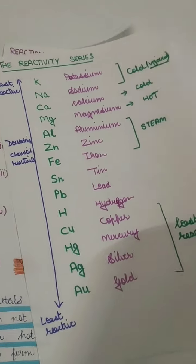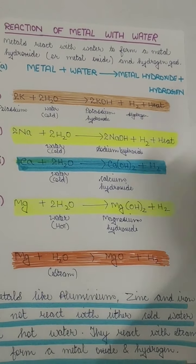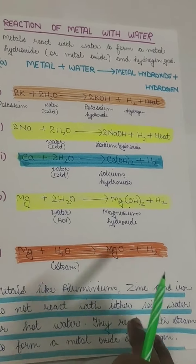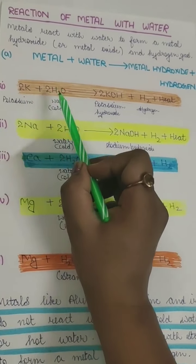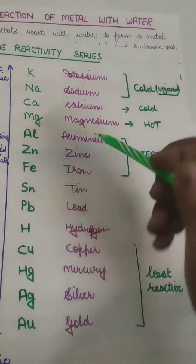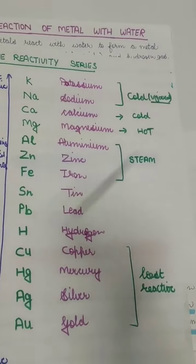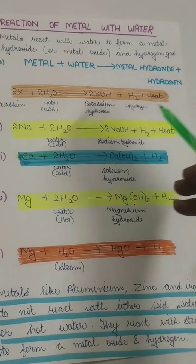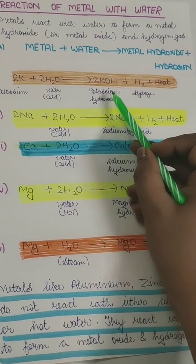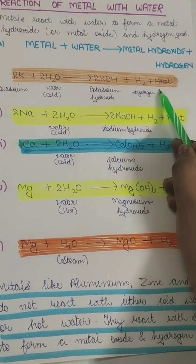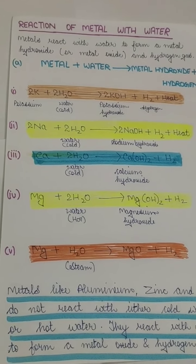That is about the reactivity series. Now, metals react with water to produce metal hydroxide, and along with that, hydrogen gas is produced. For example, potassium is so reactive — since potassium and sodium are at the top of the reactivity series, they react with water and produce metal hydroxide. It is potassium hydroxide, and along with that hydrogen gas is produced and a lot of heat is generated. That is why it is called an exothermic reaction.